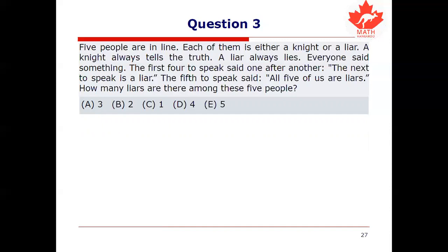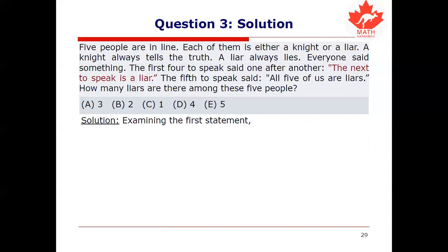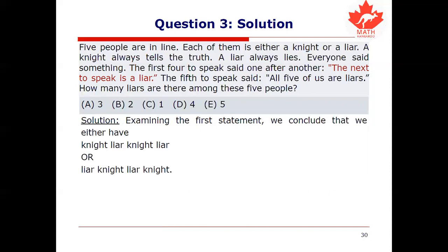Are you ready? Let's do it. Examining the first statement: 'The next to speak is a liar.' If I'm a truth teller and I say that, the person who speaks after me must be a liar. If I'm a liar and I say that, the next person to speak must be a knight. So it seems like in those first four statements, we must be alternating — liar, knight, liar, knight, or knight, liar, knight, liar. They must be alternating by the rules of the game.